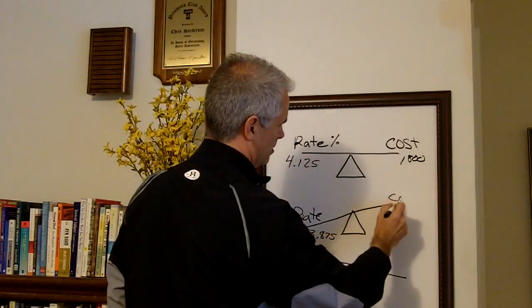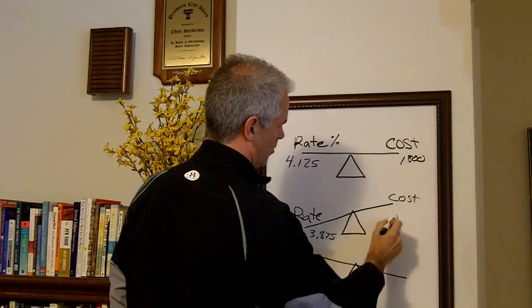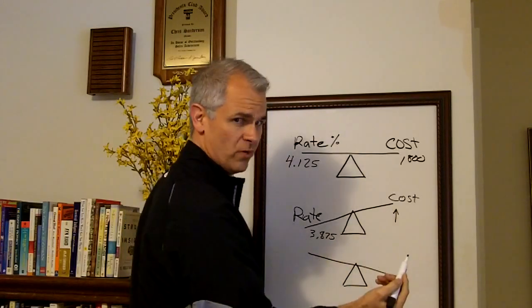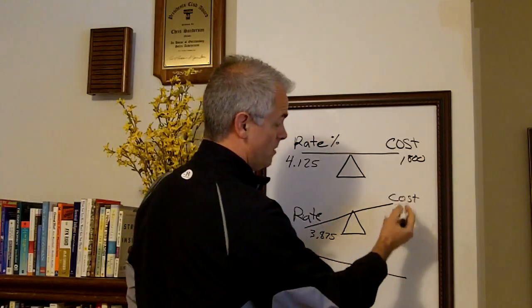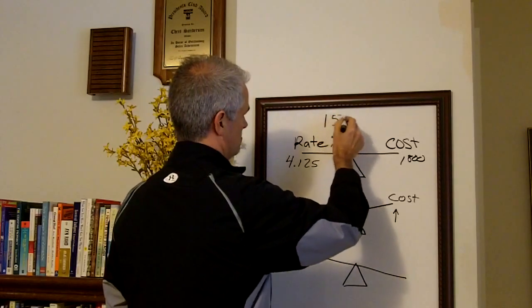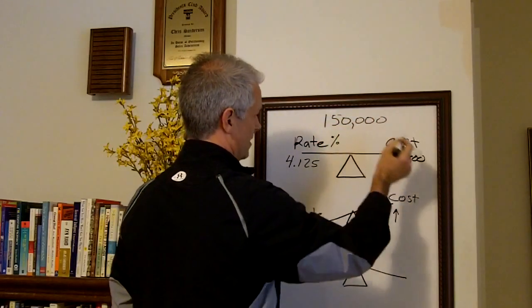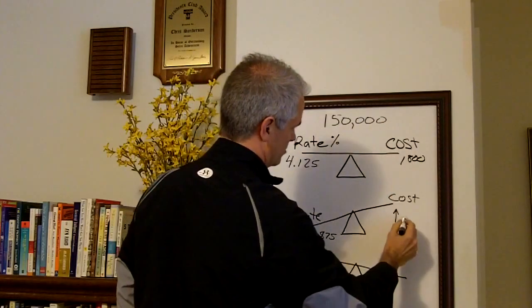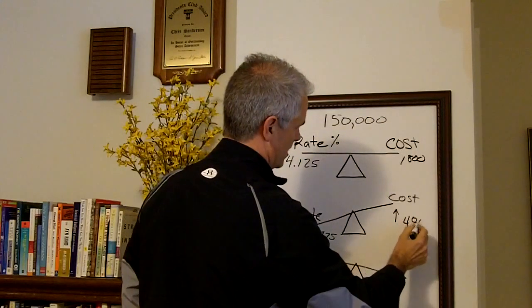But that might cost me, right? The cost now is going to go up. I'm going to have some points. Maybe I'm going to pay two points to make that happen. The loan is $150,000. That cost me an extra $3,000. So now this cost me $4,800.